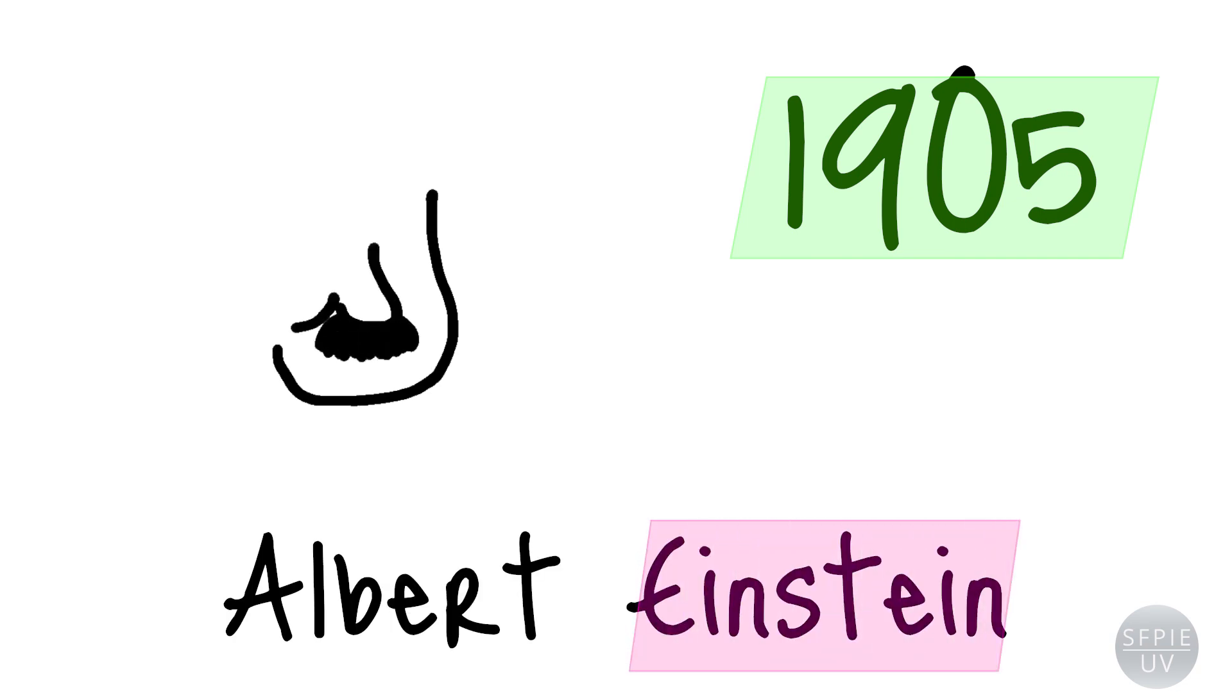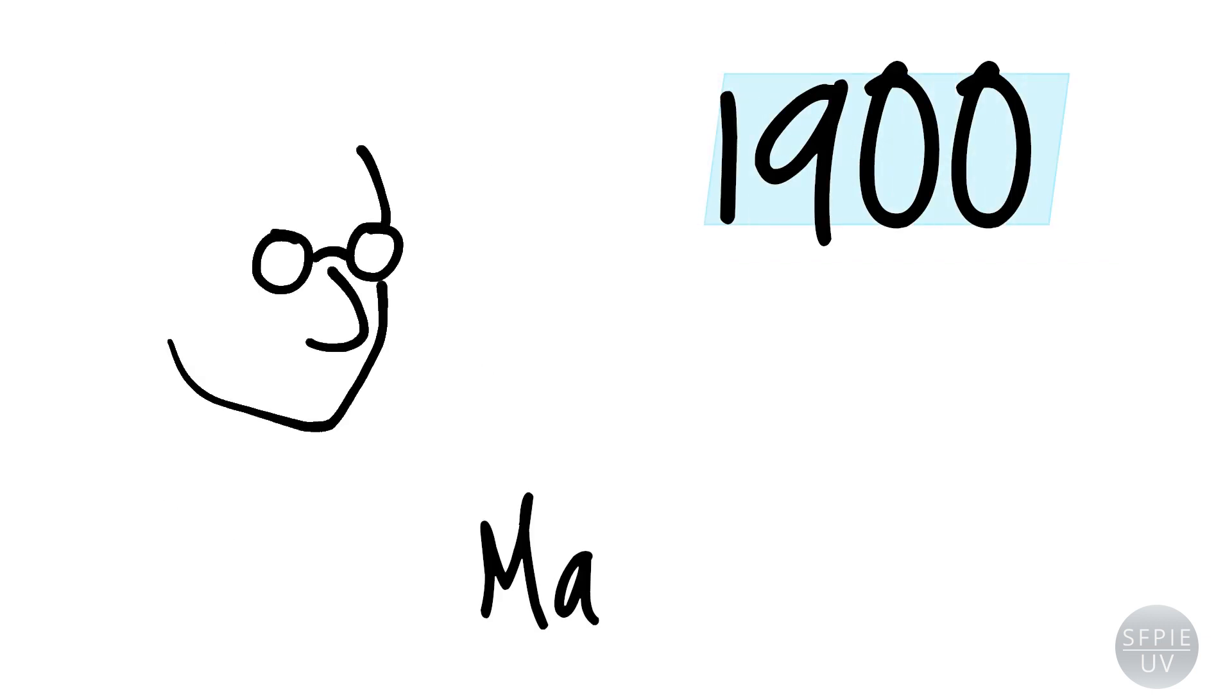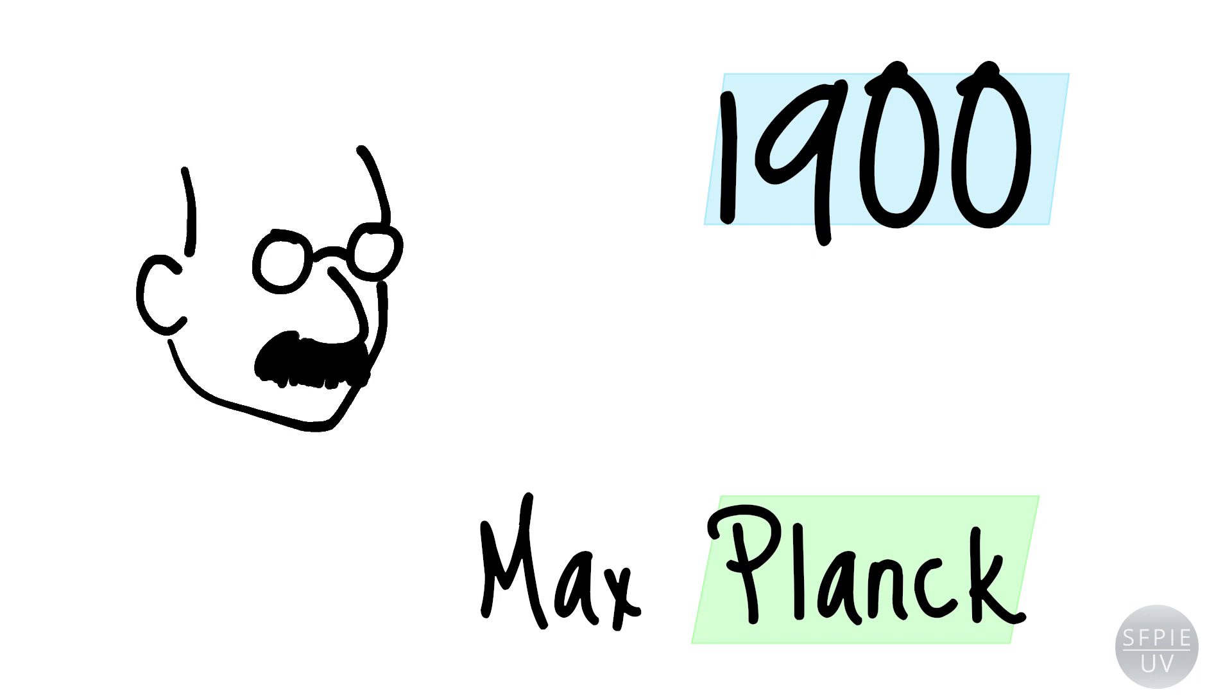In 1905, the German physicist Albert Einstein proposed an explanation of the photoelectric effect based on a hypothesis that another German physicist, Max Planck, had formulated in 1900. This was that luminous energy is constituted of independent packets, or quanta, later called photons, and that the energy of each photon is proportional to the frequency.